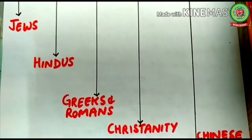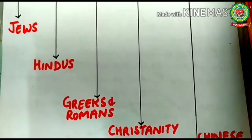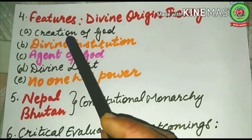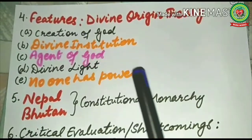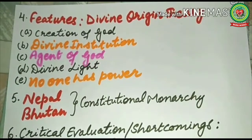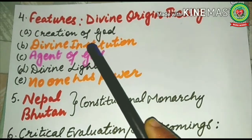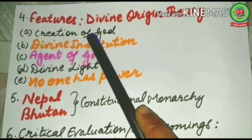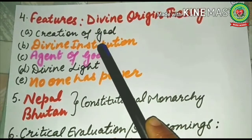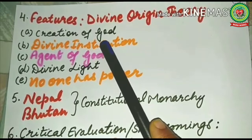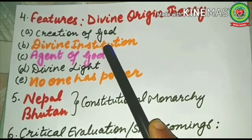Now I will talk about the features of divine origin theory. You must listen to the features carefully, as exam questions also come on this topic. The first feature is that the state is a creation of God. The second feature is that the state is a divine institution.